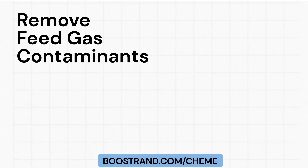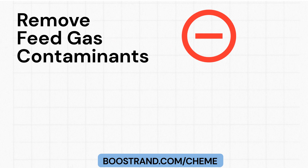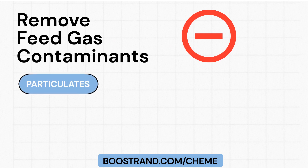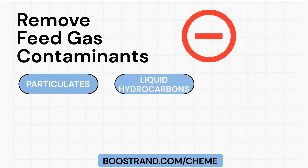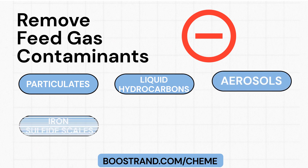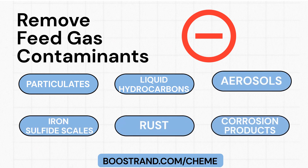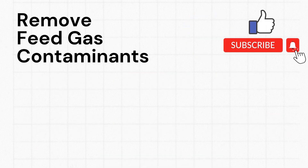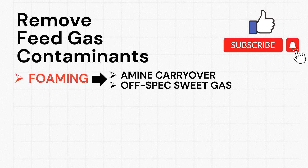Gas contaminants that need to be removed before the amine gas sweetening process include particulates, liquid hydrocarbons, aerosols, iron sulfide scales, rust, corrosion products, and other trace contaminants. These can mainly lead to foaming in the contactor, which can cause several issues such as amine carryover and off-spec sweet gas.